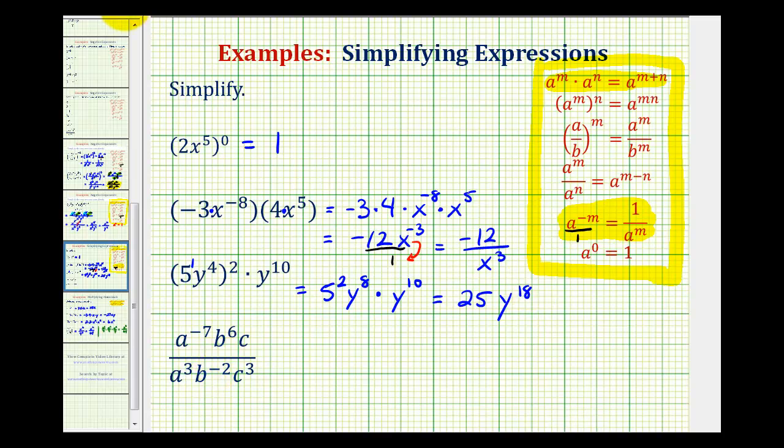Looking at our last example, we'll simplify this in three parts. We'll first deal with the quotient involving base a, then base b, and then base c. It'll probably be helpful to recognize that this c is going to have an exponent of positive one. And since we have three quotients here involving the same base, we will be subtracting the exponents.